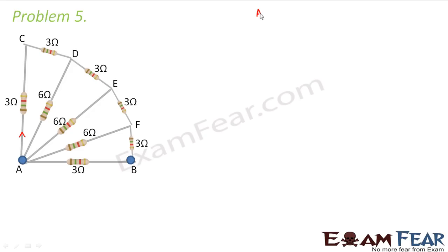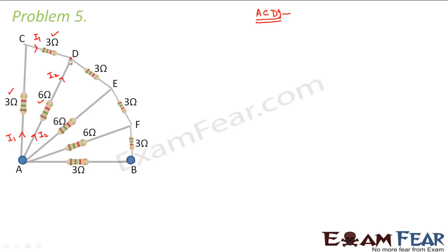The first part we consider is part ACD. When we look at only this part, suppose current comes in and some current I1 goes one way and I2 goes the other. This I1 is the same current that flows through the 3 ohm resistor, and I2 flows through the 6 ohm resistor. They both join together forming back the same current I. So this 3 ohm and this 3 ohm are in series because the same current flows through both of them.